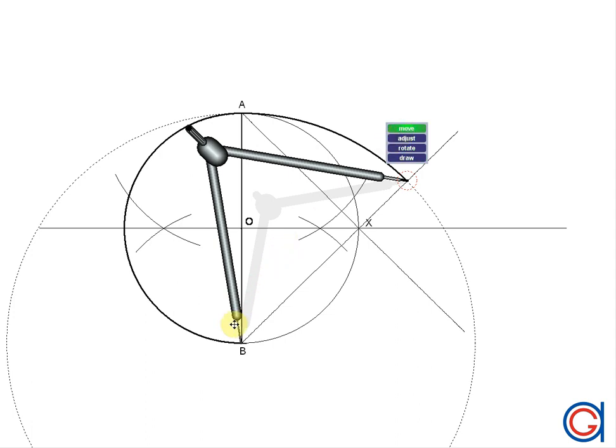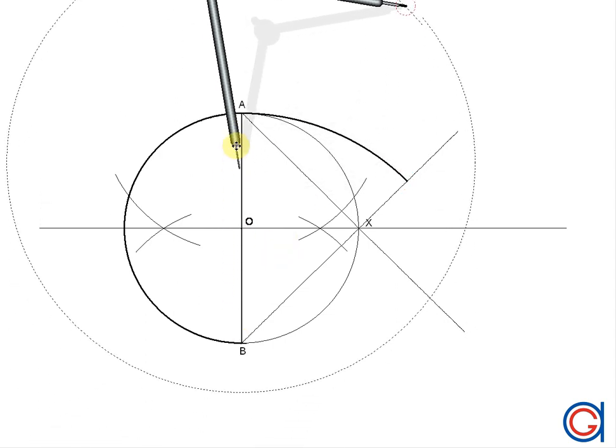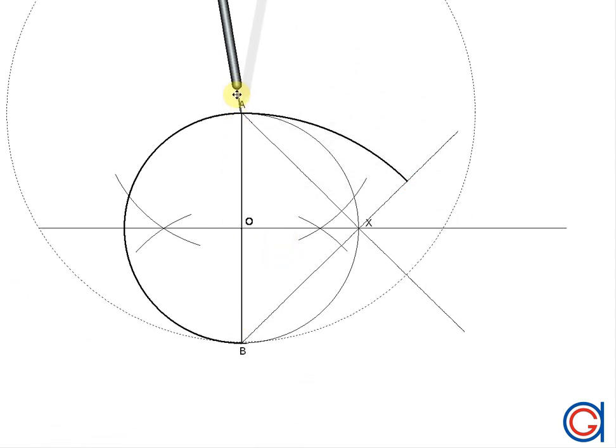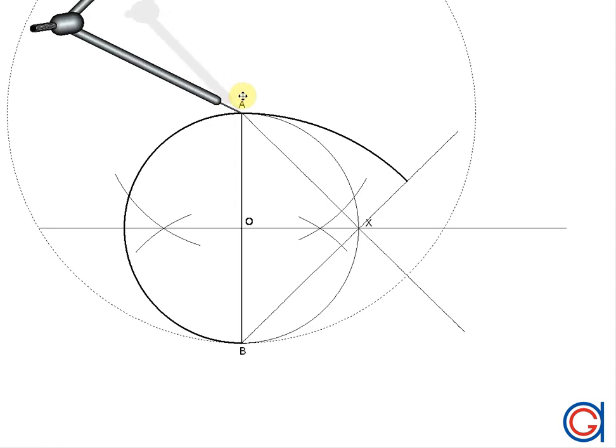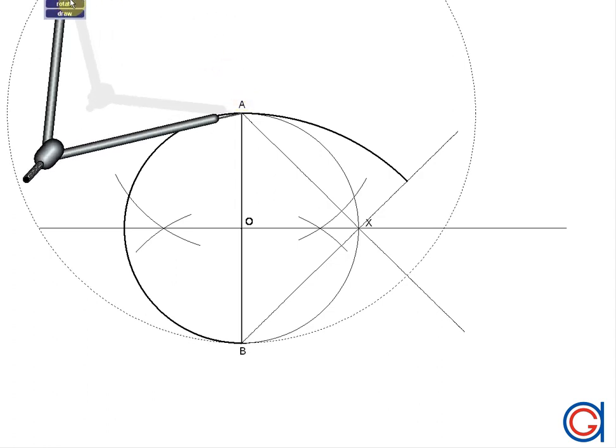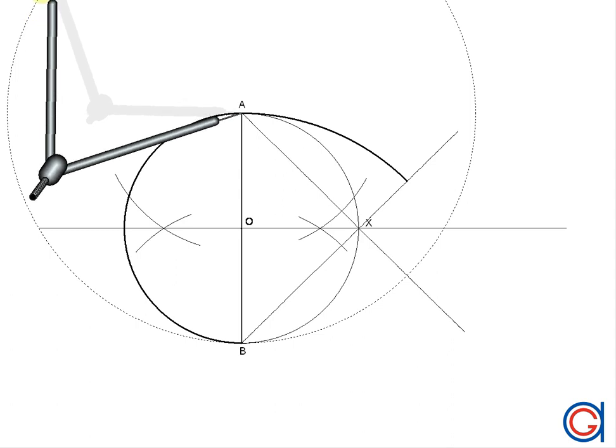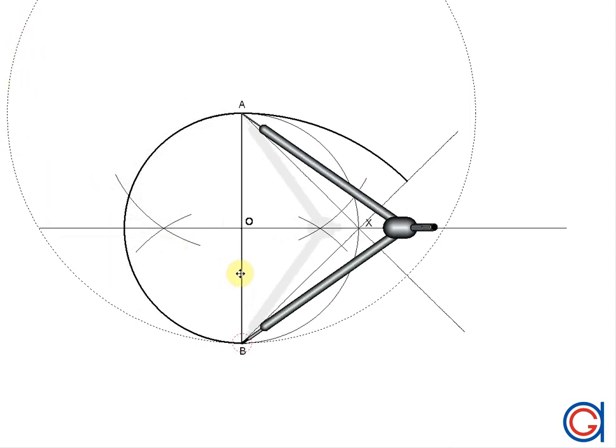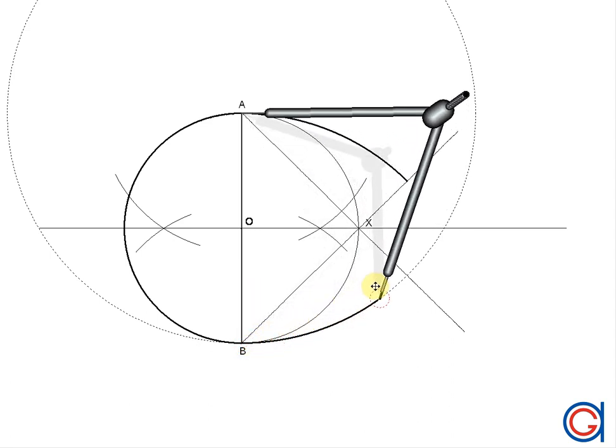And now again with the compass set on point A and radius AB, we will join point B until it touches our previously drawn elongated diagonal line, as shown here.